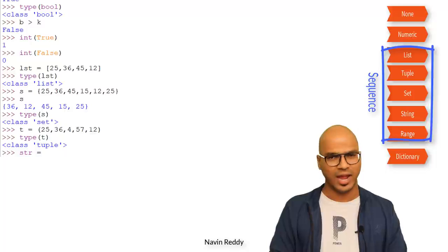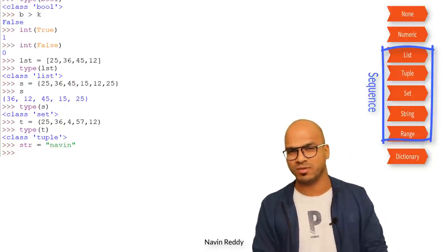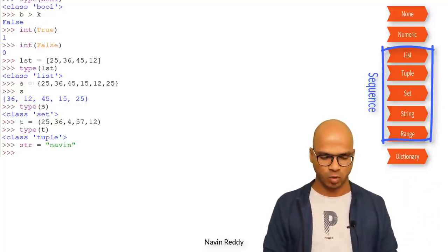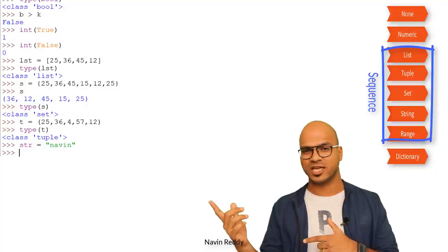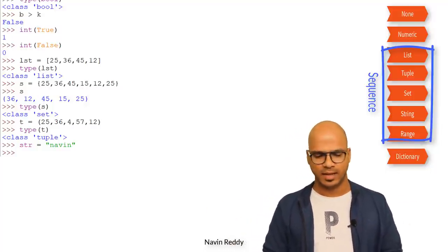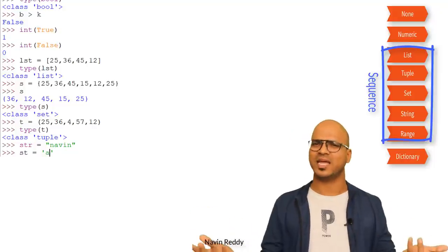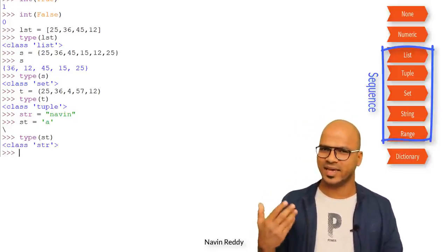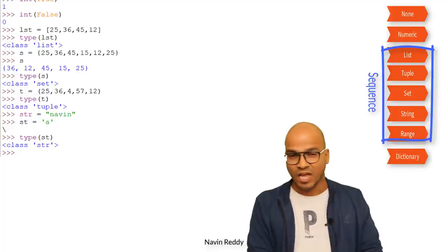We also have string type. You define it as str = "Navin" using double or single quotes — both work. Now what about character? In languages like Java, C, or C++, we have a character type. In Python we don't have a dedicated character type. If you create a string with a single character, it's still considered a string — type() shows class str. So we have string but no separate character type.